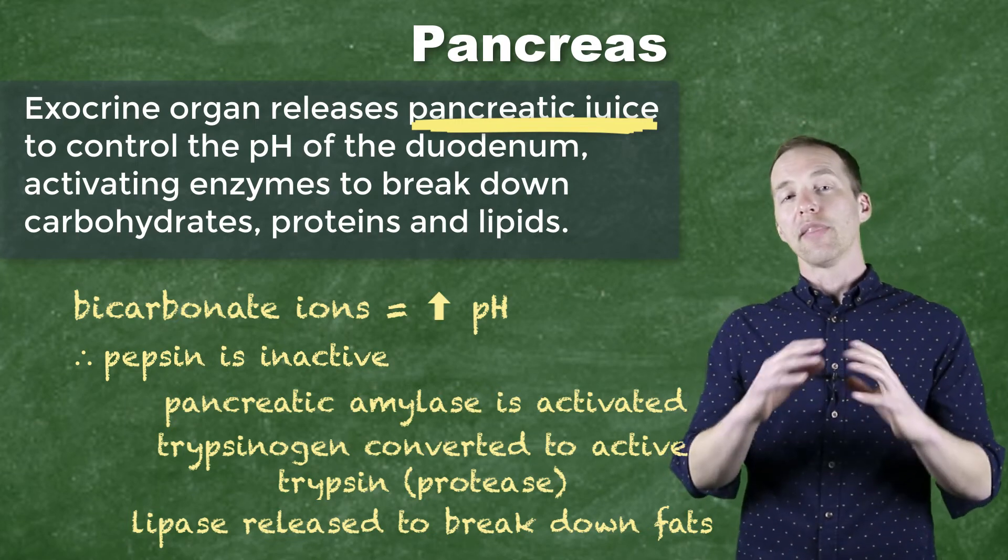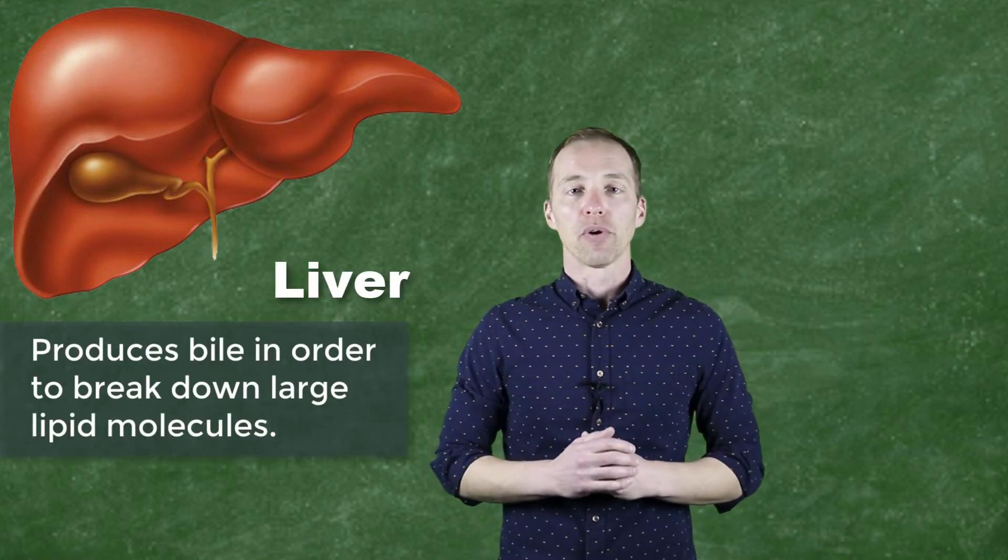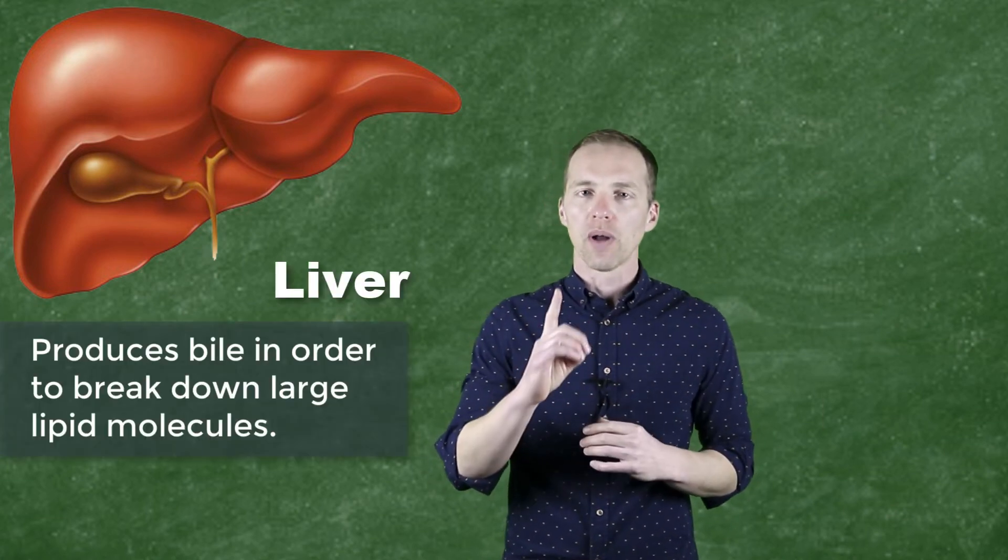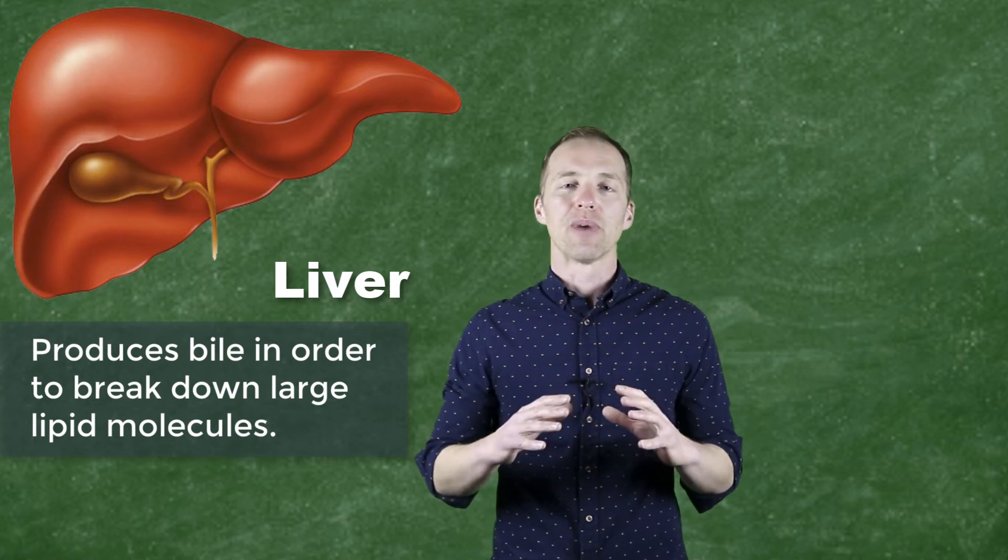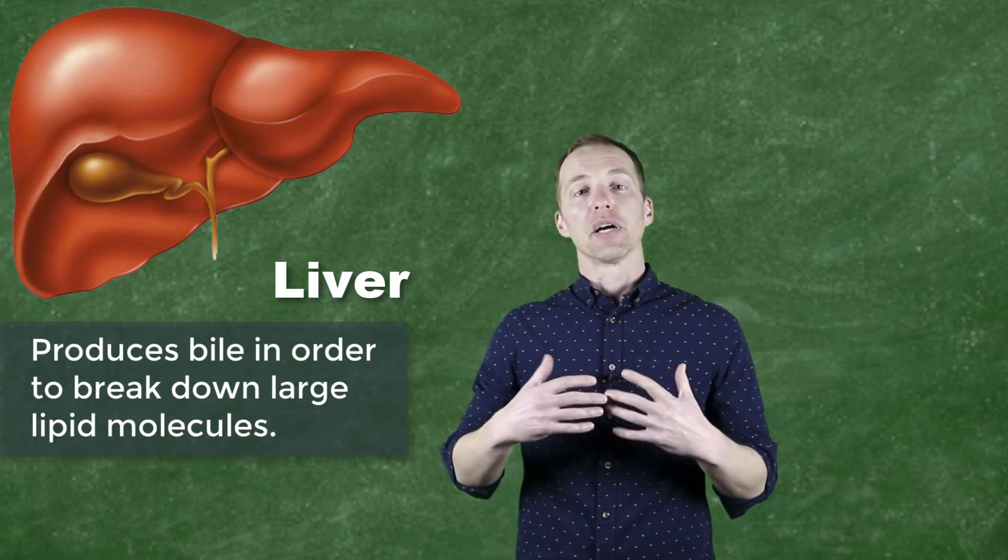So this is where another accessory organ comes in. So this big honking thing right here is your liver. Well, I guess not your liver, but it's a representation of a liver. And the liver is an extremely important organ in the body, but I'm just going to focus on one particular aspect of it, and that's the one directly involved in the digestive process. And that is in the production of bile.